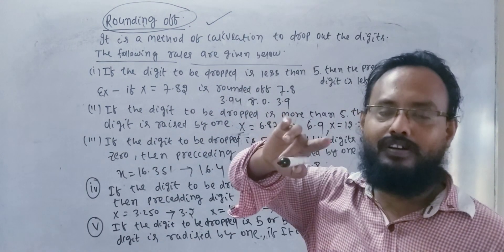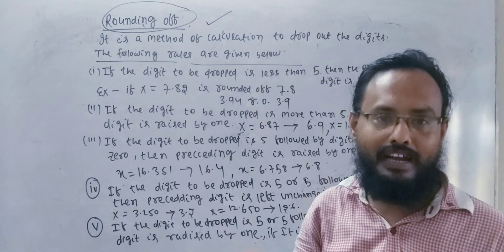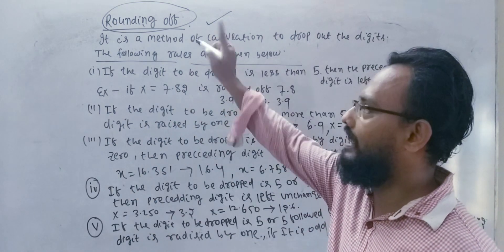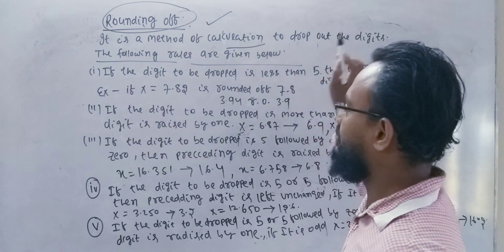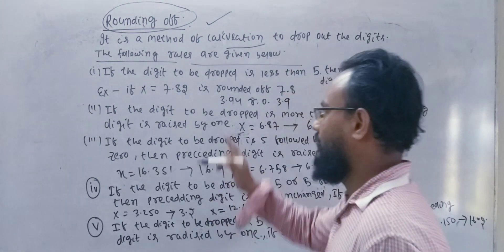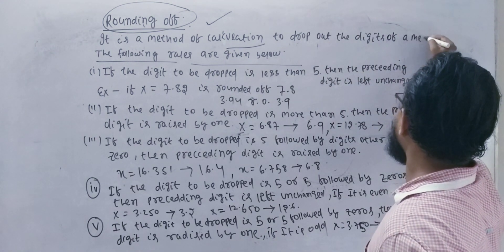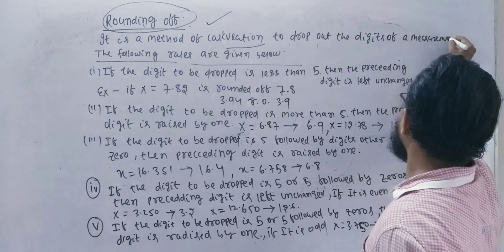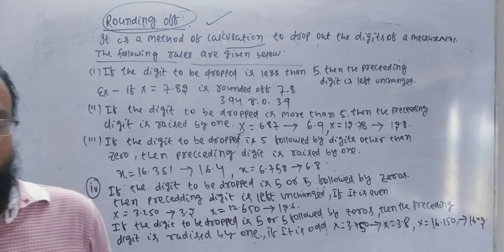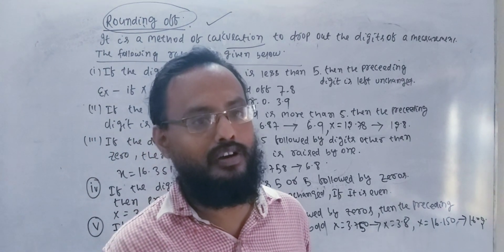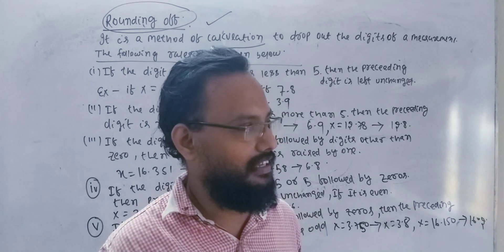You are just rounding off. Rounding off is a method of calculation used to drop digits of a measurement. How many digits are there? For example, if you want to write down a number, is G equal to zero in the calculation? No. So if you want to apply the rules, here is the first rule.